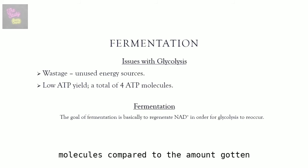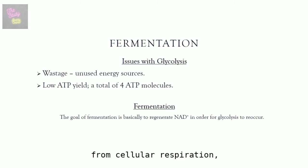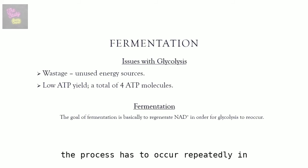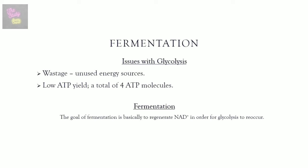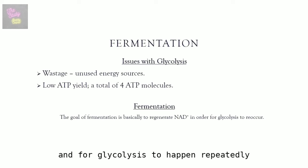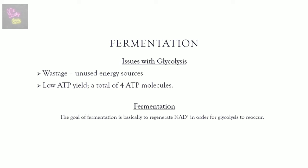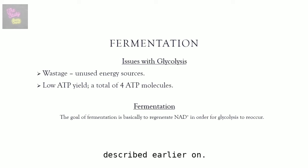Compared to cellular respiration — particularly the electron transport chain — glycolysis yields very little ATP. Since the yield is low, glycolysis must occur repeatedly to produce sufficient ATP for the cell's needs. For glycolysis to repeat, a constant supply of NAD+ is needed. However, at the end of glycolysis, NAD+ is not available because it has been reduced to NADH. This is where fermentation comes in: the goal of fermentation is to regenerate NAD+.